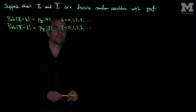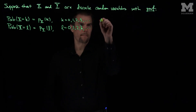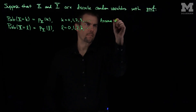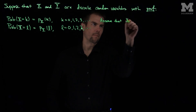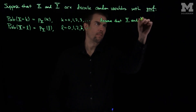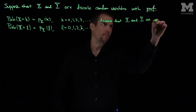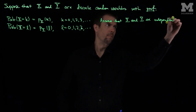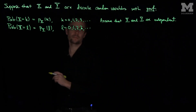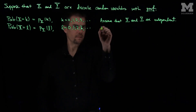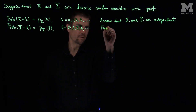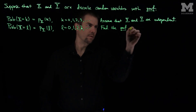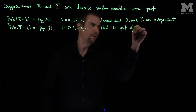Now let's assume that X and Y are independent, and let's find the probability mass function of X plus Y.